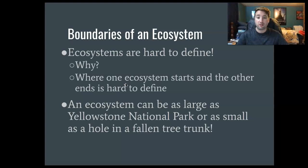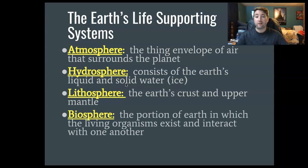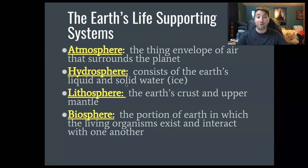Let's talk about the Earth's life-supporting systems. The biosphere is the portion of Earth in which living organisms exist and interact with one another. The atmosphere is a thin envelope of air that surrounds the planet, broken down into layers: the troposphere, stratosphere, mesosphere, thermosphere, and exosphere. The troposphere is where we live and where weather occurs. The stratosphere is where the ozone layer is. The hydrosphere is all the water, and the lithosphere — which we talked about last year — includes the Earth's crust and upper mantle.